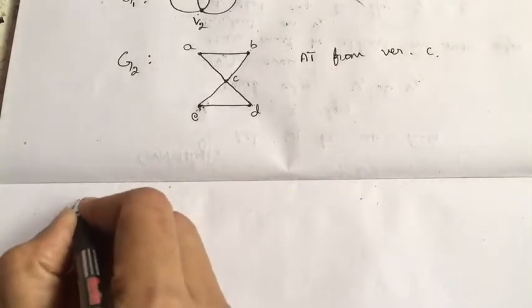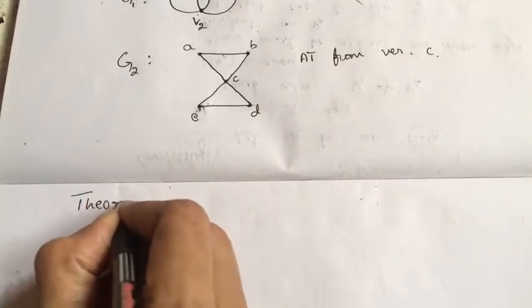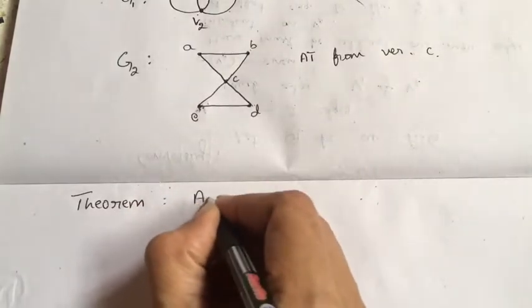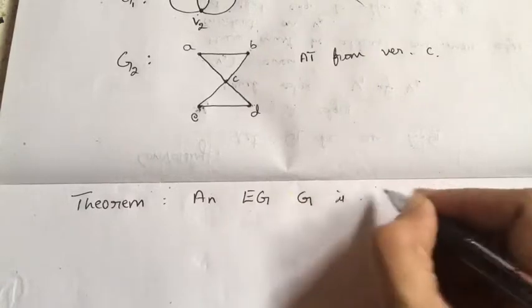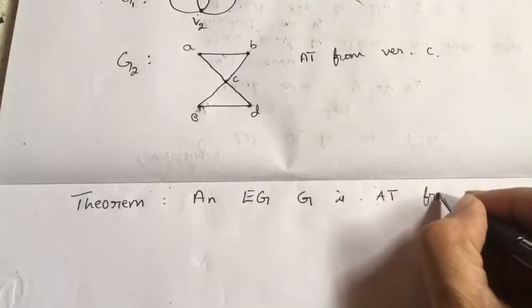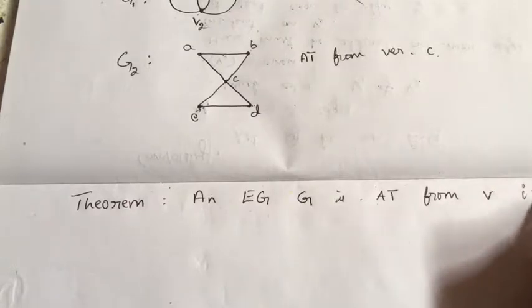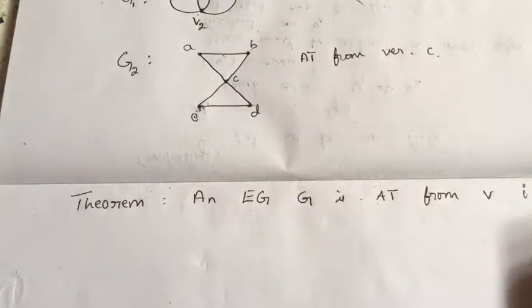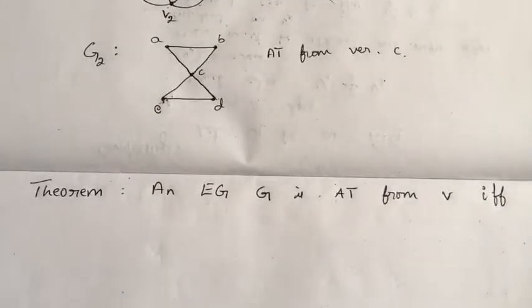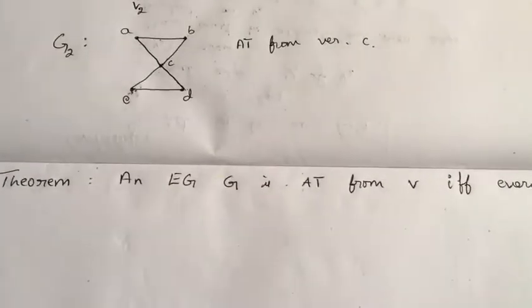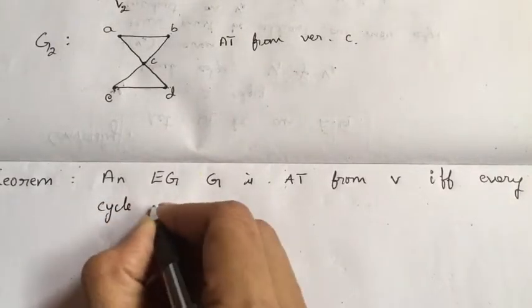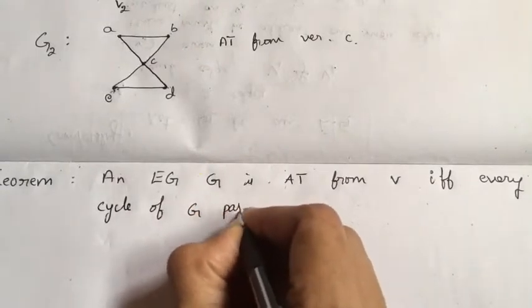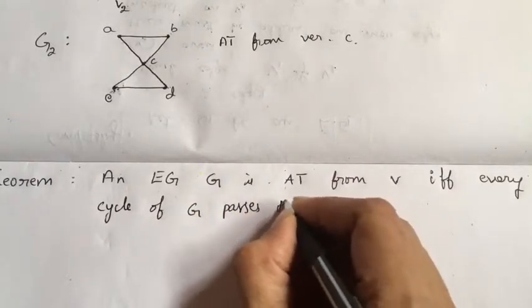Before explaining why, I will mention one more theorem: an Euler graph G is arbitrarily traceable from vertex V if and only if every cycle of G passes through V.